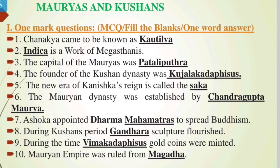1st question: Chanakya came to be known as ___. Answer is Kautilya. ___ is a work of Megasthenes. Answer: Indica is a work of Megasthenes. The capital of the Mauryas was ___. Answer is Patliputra.